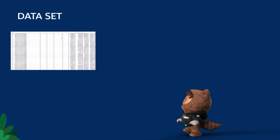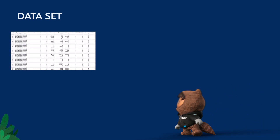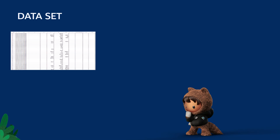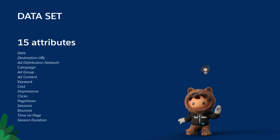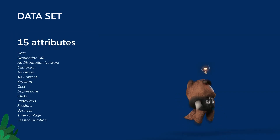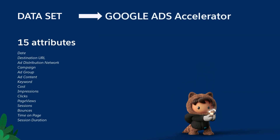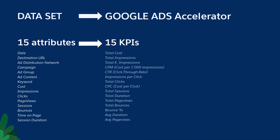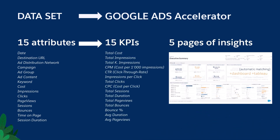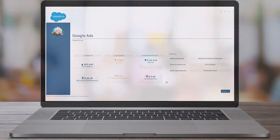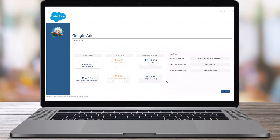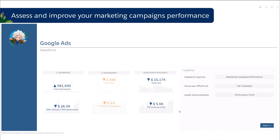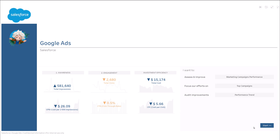Do you know how much value you can get from your Google Ads dataset? With only 15 attributes, Tableau immediately provides you with a complete solution of 15 KPIs across 5 pages of insights. This Tableau accelerator allows you to assess and improve the performance of your marketing campaigns on Google Ads.